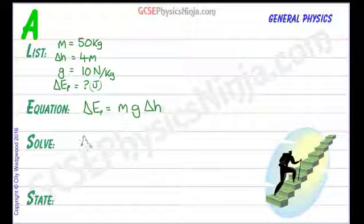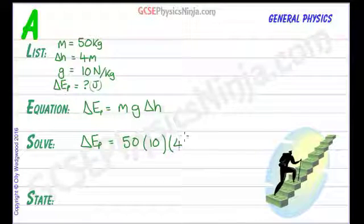Let's put the numbers in. Delta EP is equal to 50 kilograms multiplied by 10 multiplied by the height 4 meters vertically upwards. Notice that the height will be the vertical distance, not the distance along the staircase.